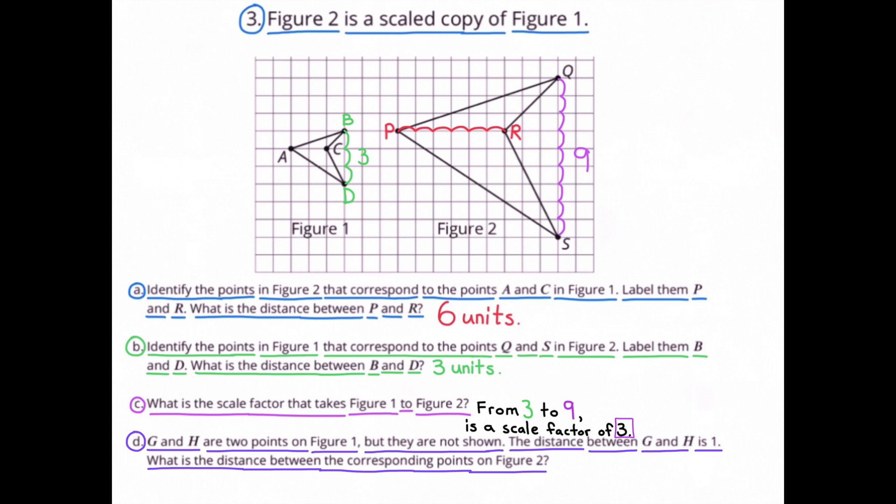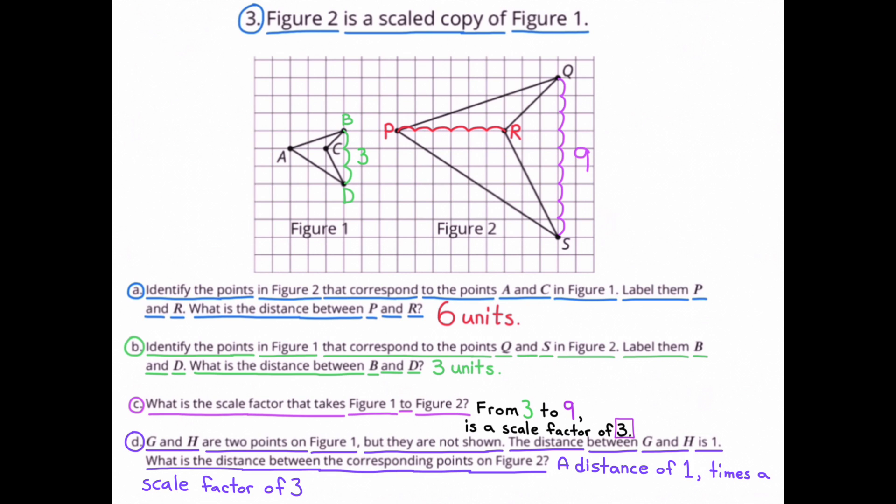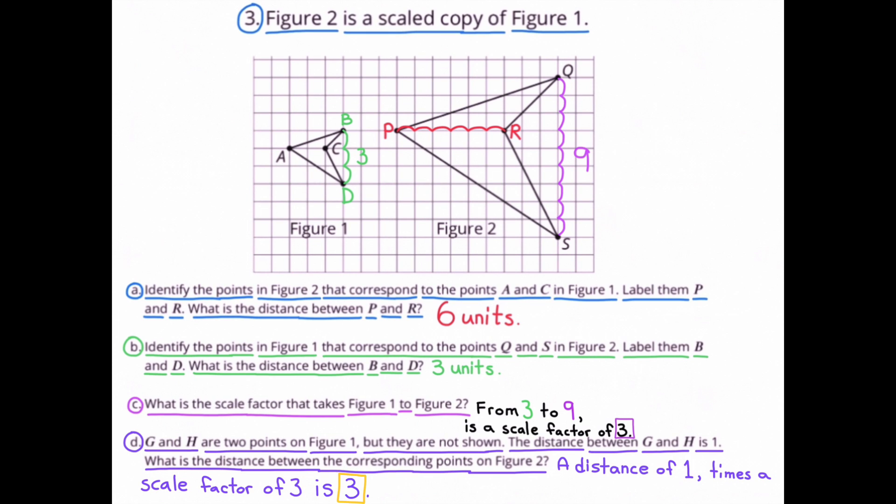D. G and H are 2 points on Figure 1. But they are not shown. The distance between G and H is 1. What is the distance between the corresponding points on Figure 2? We've already figured out that the scale factor is 3. So if the distance between points G and H on Figure 1 is 1 unit, then the corresponding distance on Figure 2 would be 1 times 3, which is 3 units.